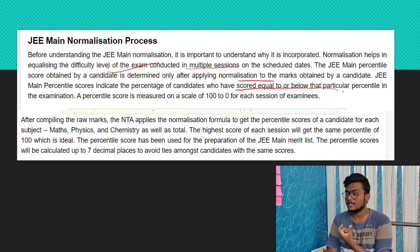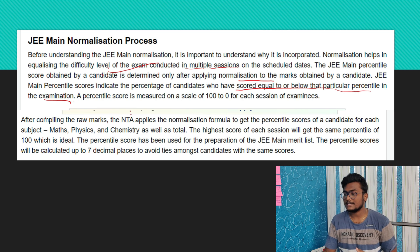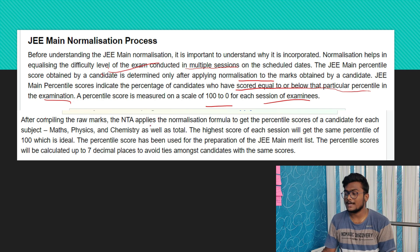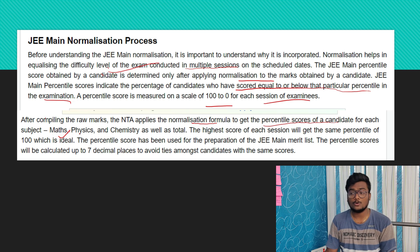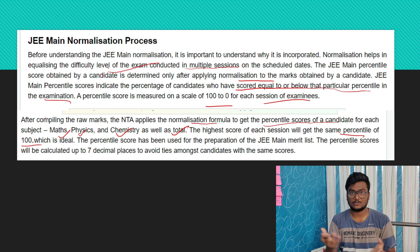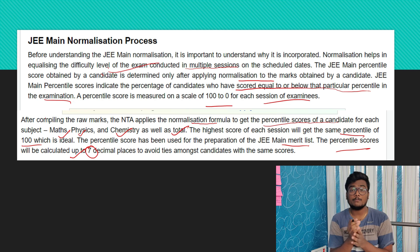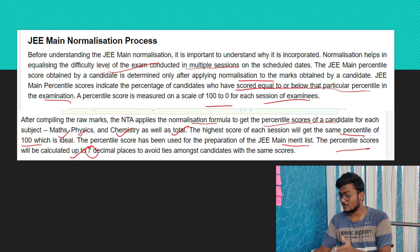The JEE Main percentile indicates the percentage of candidates who have scored equal to or below that percentile in the examination. A percentile is measured on a scale of 100 to 0 for each session. For every slot they calculate the percentile and then merge everything. After compiling, NTA applies the normalization formula to give percentiles to each candidate for Maths, Physics, Chemistry, and total. The highest scorer of each session gets 100 percentile. Percentile scores are calculated up to seven decimal points so there are fewer tie-breakers.